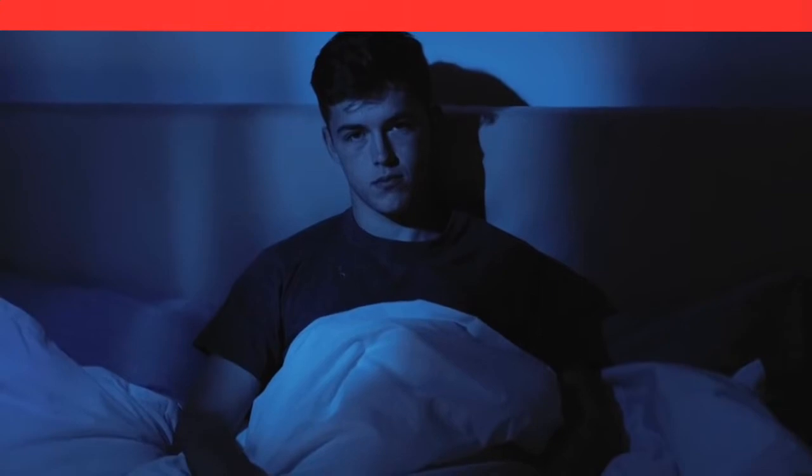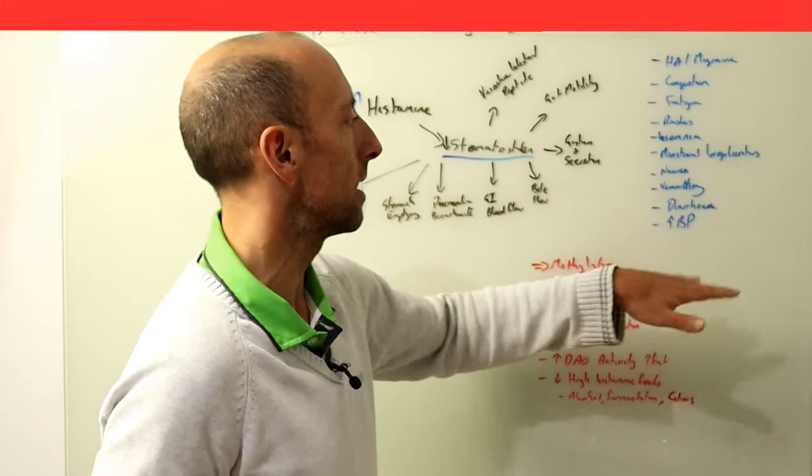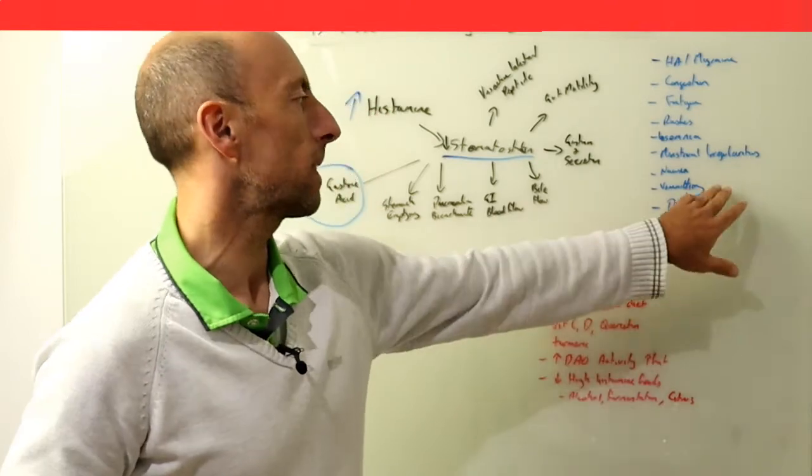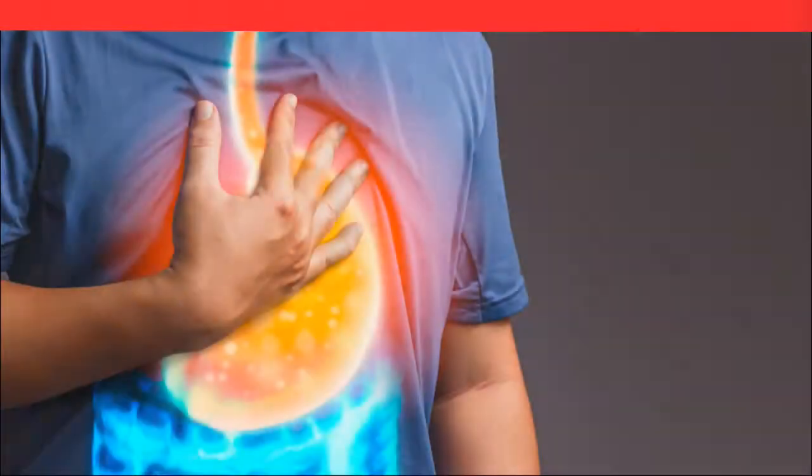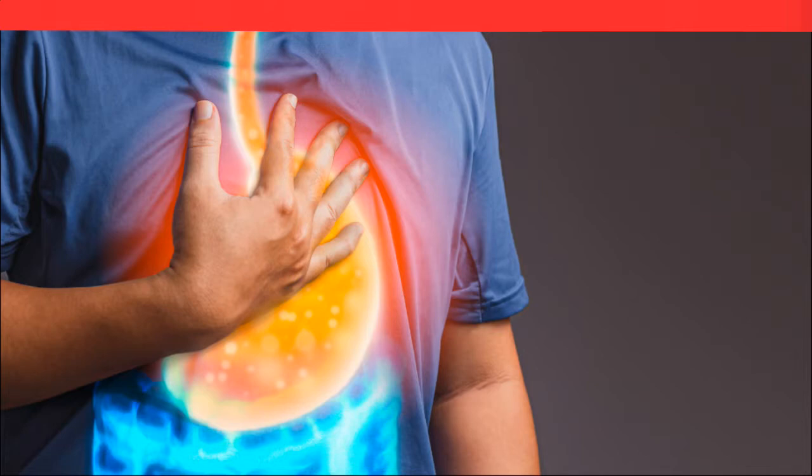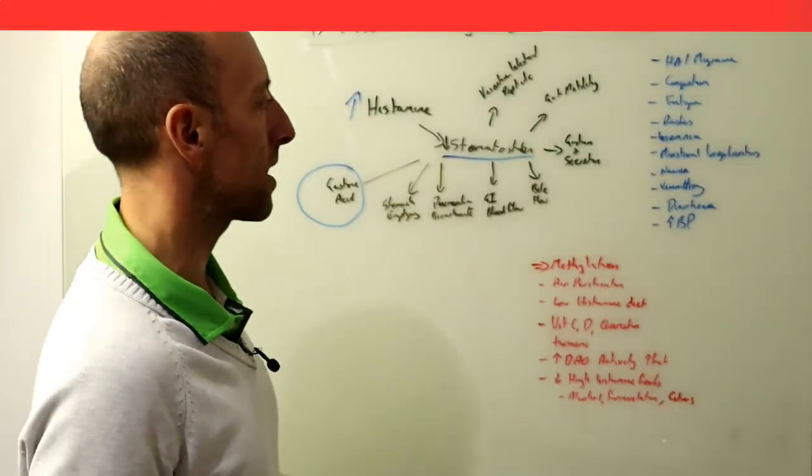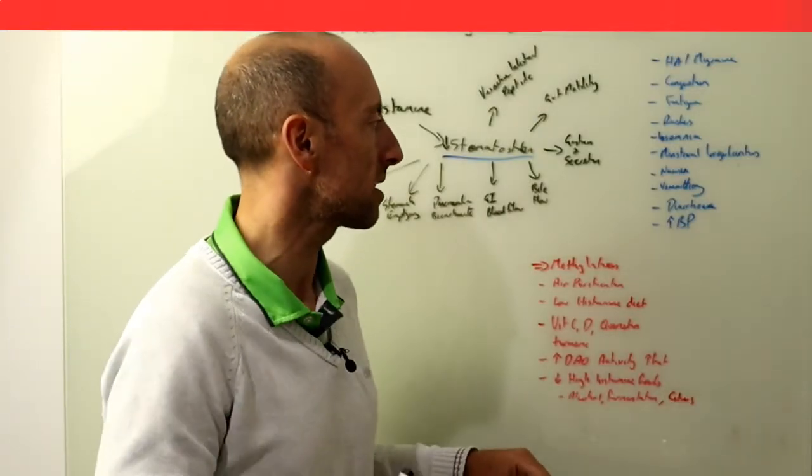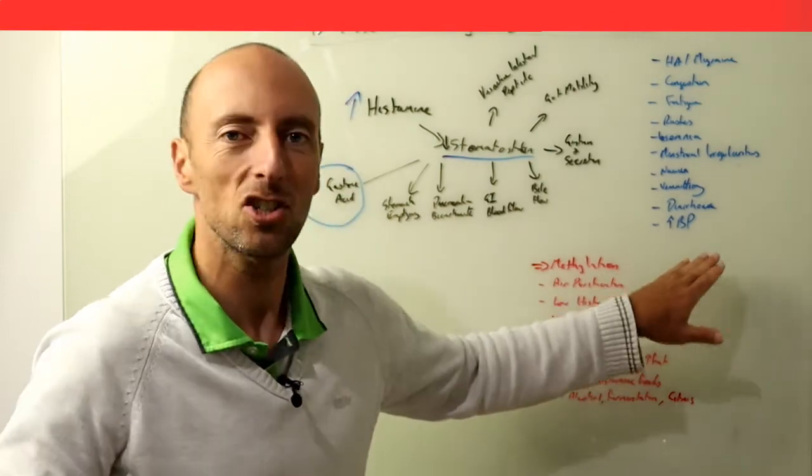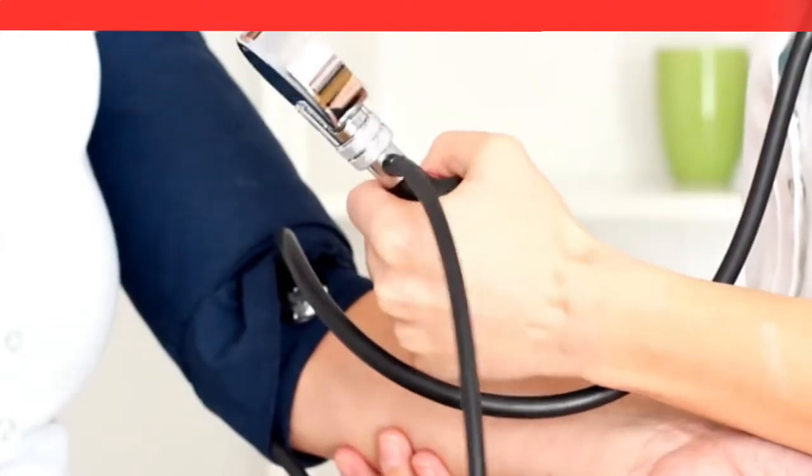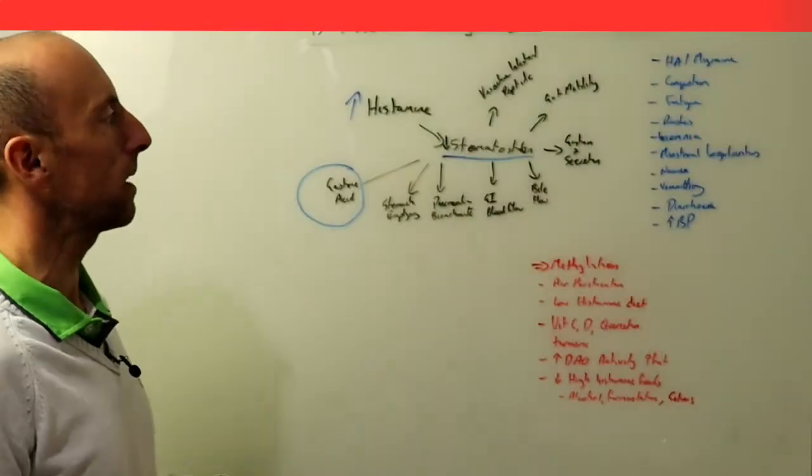Skin rashes, especially hives, menstrual irregularities, nausea and vomiting, diarrhea. With these things we can also include reflux and indigestion, which we see from changes in stomach acid production and valvular changes as well.